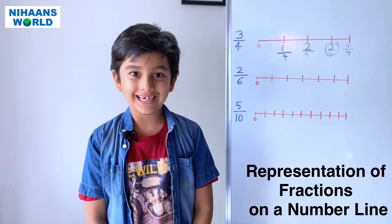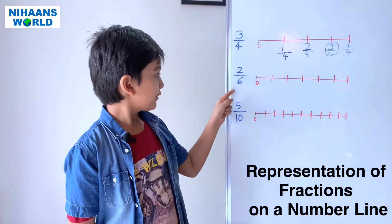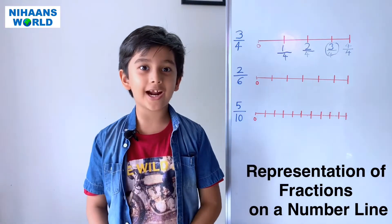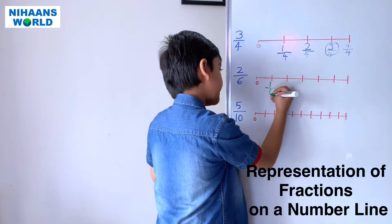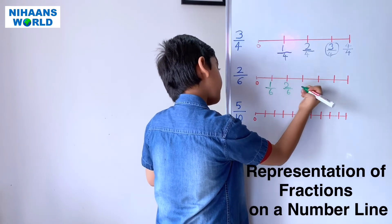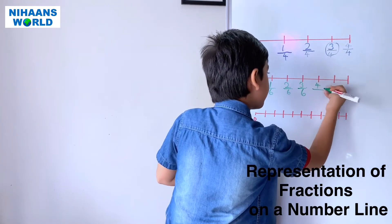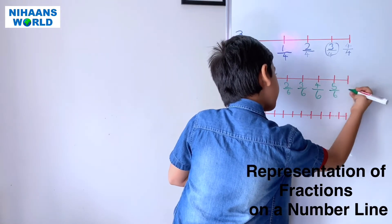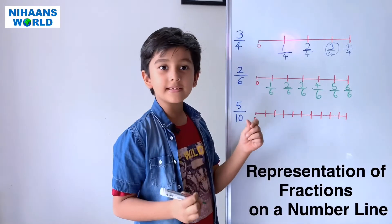Friends, let us do the next example. It is 2 by 6, so 6 is the denominator, so we have 6 parts. Let's start writing: 1 by 6, 2 by 6, 3 by 6, 4 by 6, 5 by 6, 6 by 6. So where is the answer?